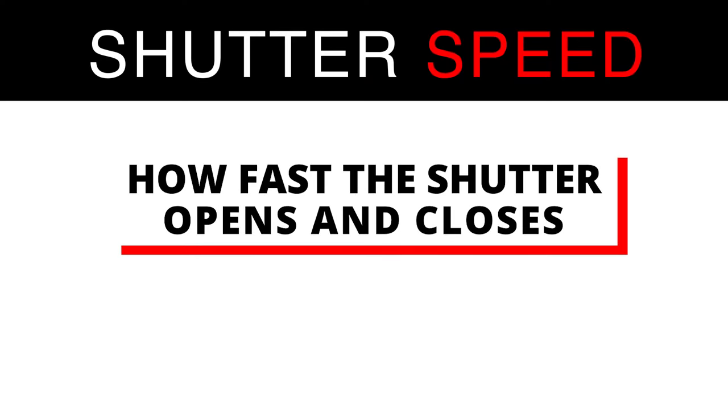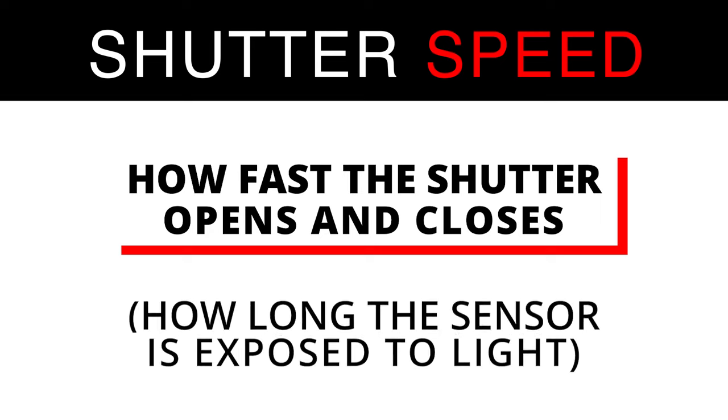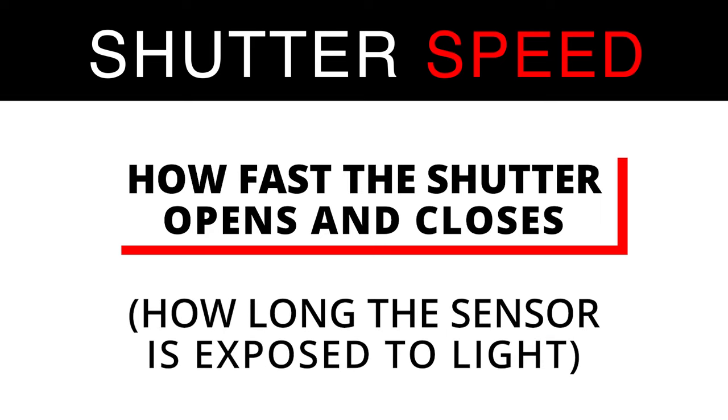The next corner of the exposure triangle is shutter speed. Shutter speed is pretty much exactly what it says it is — it's how fast the shutter in your camera opens and closes. More specifically, it's the length of time your camera sensor is exposed to light when you click the shutter. It's measured in seconds or fractions of seconds, such as 1/1000, 1/500, and 1/250, and so on. Shutter speed, along with the other points of the exposure triangle, plays a really important role in the overall exposure, as well as motion blur and freezing of motion in the image.